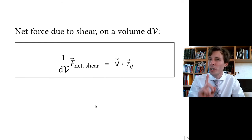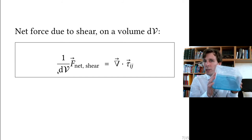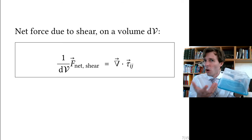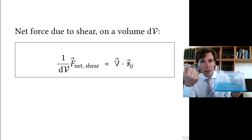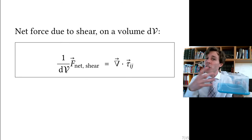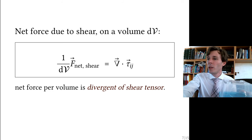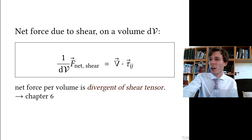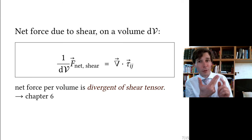We can write this even more compactly: the divergence of the X component, the divergence of the Y component, and the divergence of the Z component together as a vector is simply the divergence of the shear tensor. So the net force due to shear per unit volume on a small cubic particle is the divergence of the shear tensor. The shear tensor has 18 components, and taking its divergence reduces this to three components, giving us the force in Newtons per cubic meter that shear exerts on the particle.